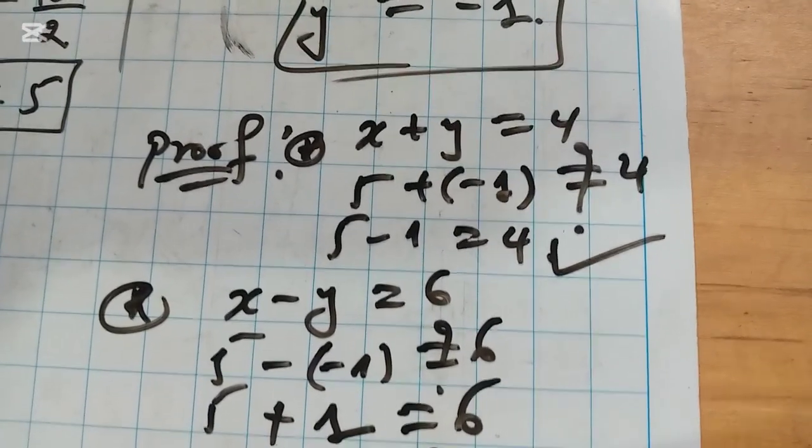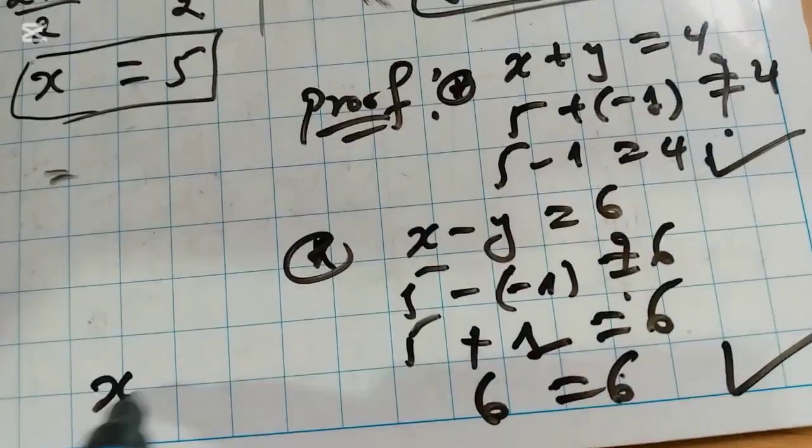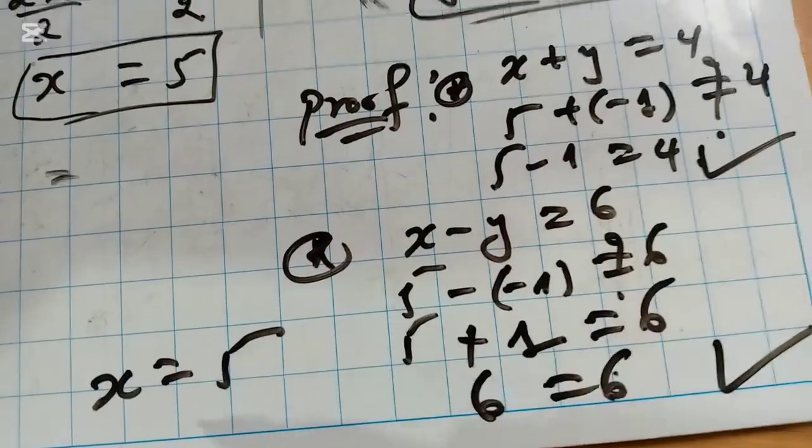So X equals 5 and Y equals negative 1. Those are the values of our X and our Y.